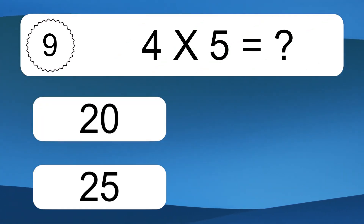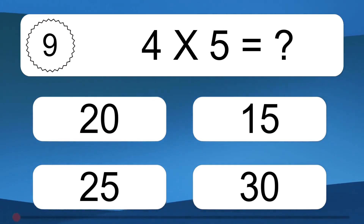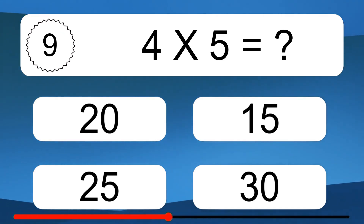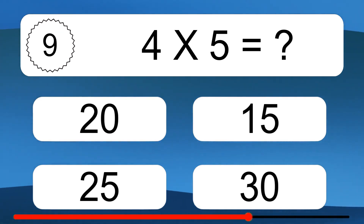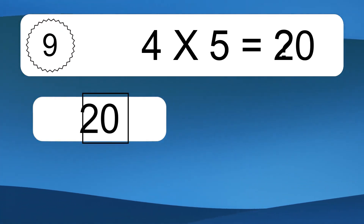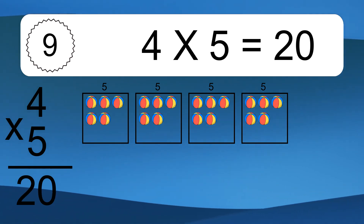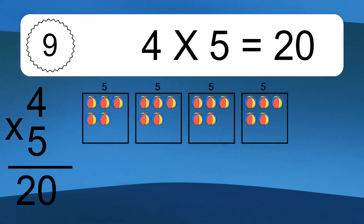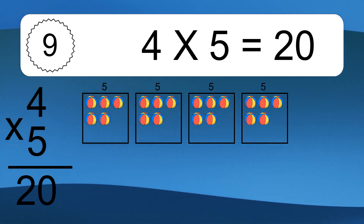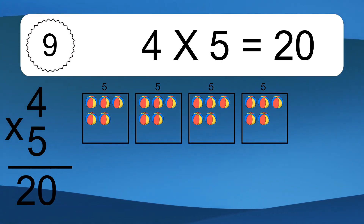4 times 5 equals what? 4 times 5 equals 20. We have 4 boxes and each box has 5 colorful balls inside. If you count all the balls in all the boxes together, you will have 4 times 5 balls. This equals 20 balls.